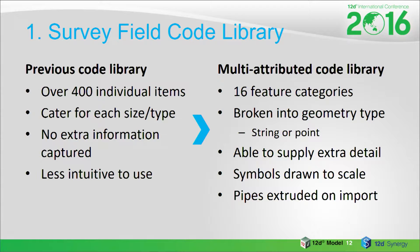Previously, they were all flagged as individual codes. What we've decided to do is approach it more as a GIS, especially with the advent of using attributes more for our data. We wanted to value-add information to our objects that we're capturing in the field. So we decided to group those 400-odd codes into like categories — water, sewer, recycle, topography, etc. Once we'd grouped those, we further broke those categories down into the geometry type of the object we were capturing, so whether we were capturing it as a line string or as a point feature.